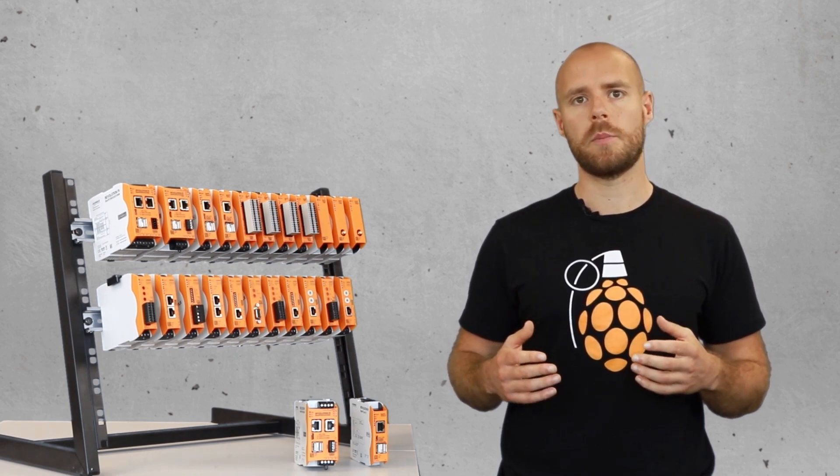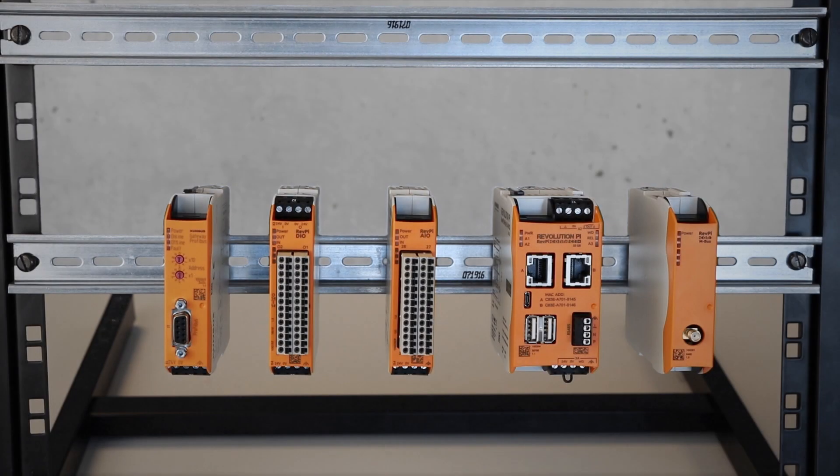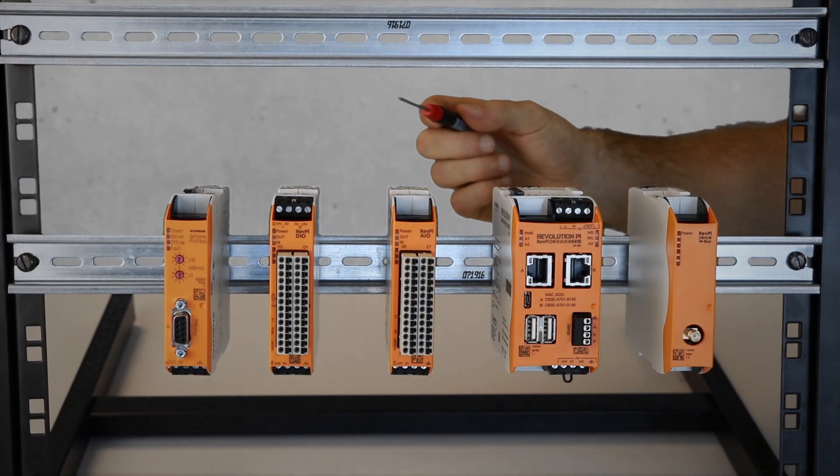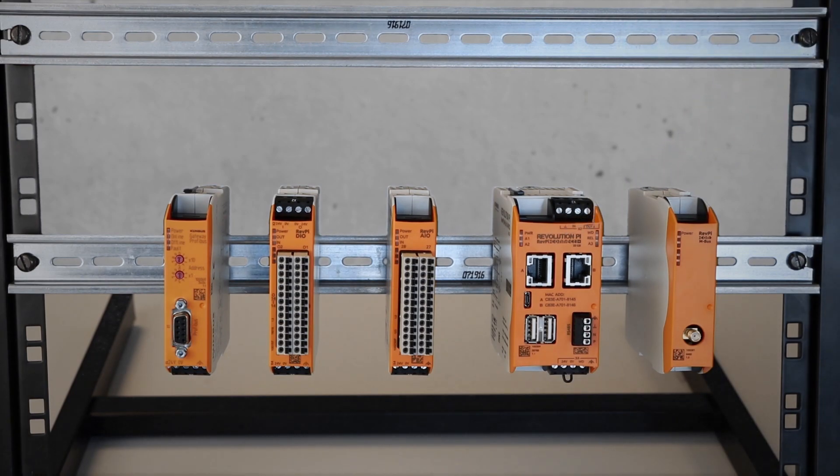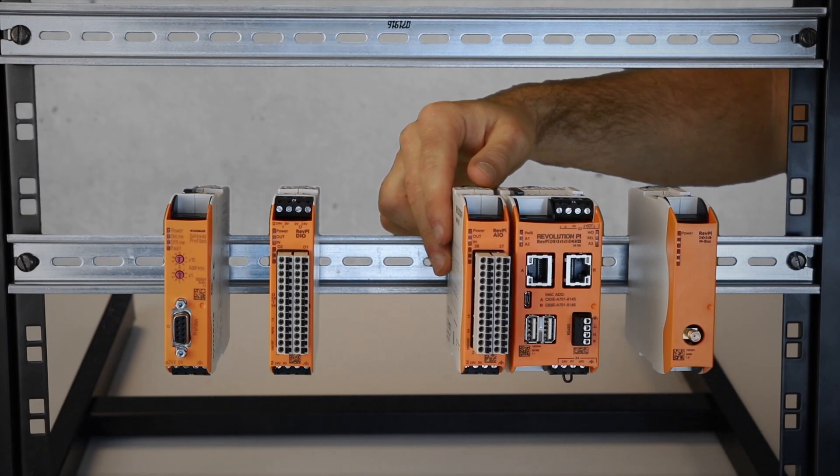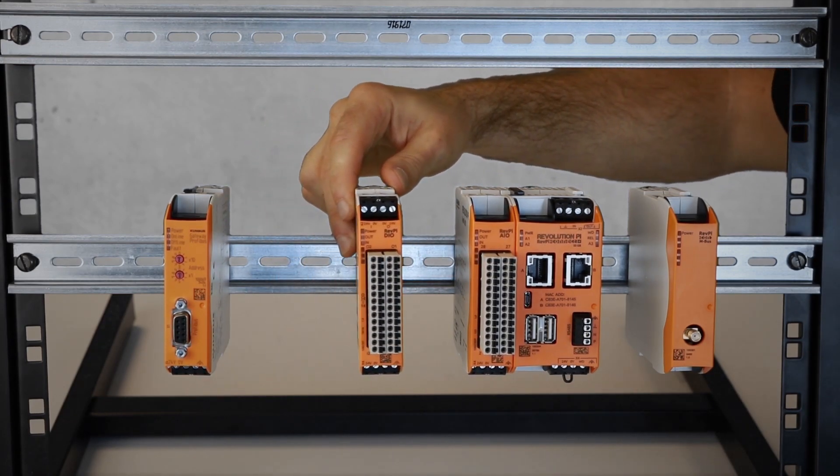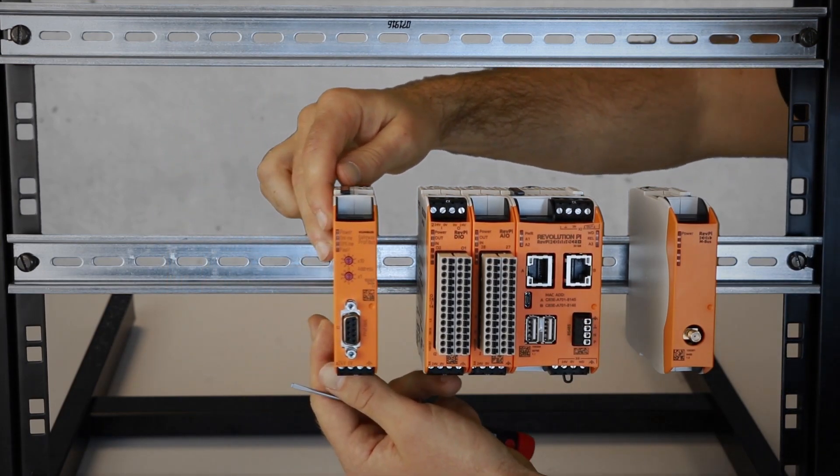Now I will put together a possible RevPi Connect system for you. As a base module, I'm using a RevPi Connect Plus. Now I take two I/O modules, as well one Profibus gateway and the RevPi CON MBUS to expand my RevPi Connect system. So this is the analog input and output card, the digital input and output card, and the Profibus gateway.